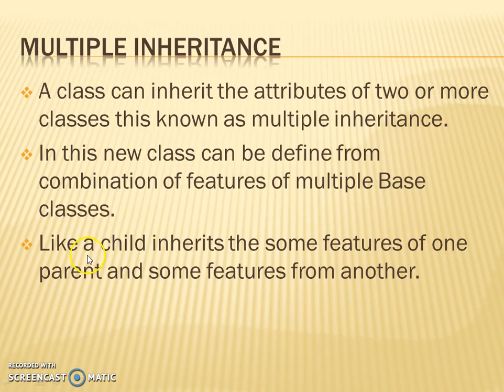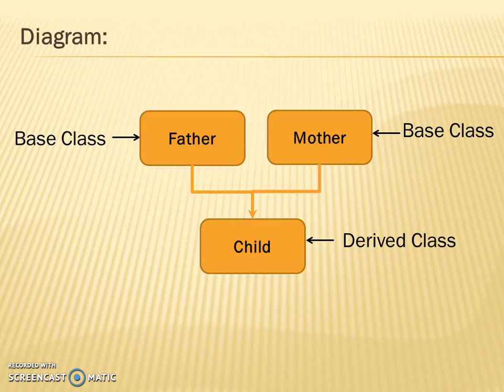Like a child inherits some features from one parent and some features from another. For example, a child receives features from his father as well as mother. That is, one child derived class receives features from more than one base class, that is two base classes.